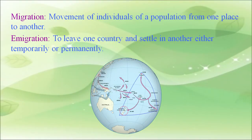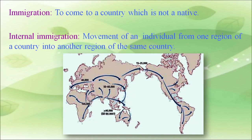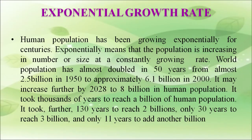Migration is the movement of individuals of a population from one place to another. Immigration means to leave one country and settle in another, either temporarily or permanently. Internal migration is the movement of an individual from one region of a country to another region of the same country. Human population has been growing exponentially for centuries. World population has almost doubled in 50 years, from almost 2.5 billion in 1950 to approximately 6.1 billion in 2000.